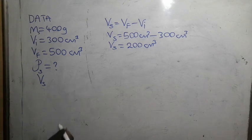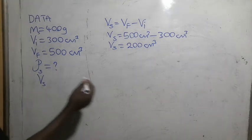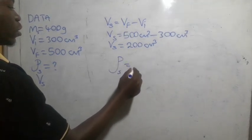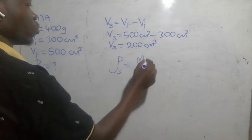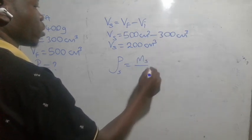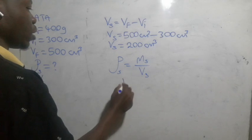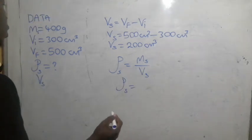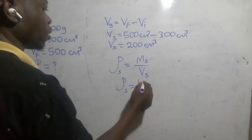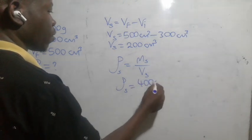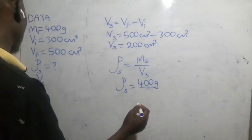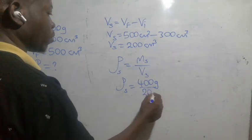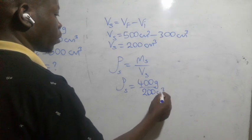Now that we have the volume of the stone, we can find the density. Density of the stone equals mass of the stone over volume of the stone. Density equals 400 grams over 200 cubic centimeters.